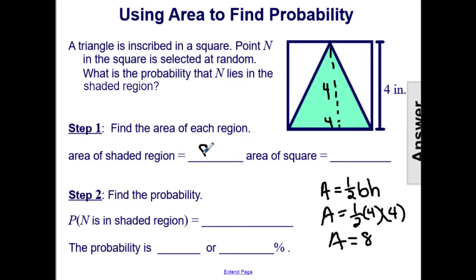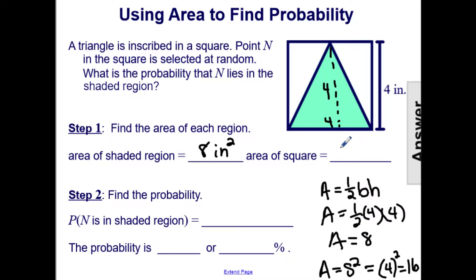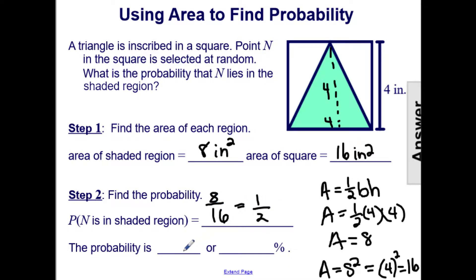The area of the shaded region is 8 inches squared. Now for the area of the square: the area of a square is its side squared, which in this case is 4. So it would be 4 squared, which is 16, so the area of the square is 16 inches squared. Finding the probability that point N is in the shaded region gives us 8 over 16, which reduces to 1/2. So we have 1/2, or 0.5, or 50%.